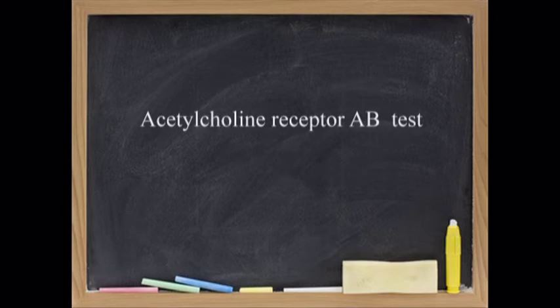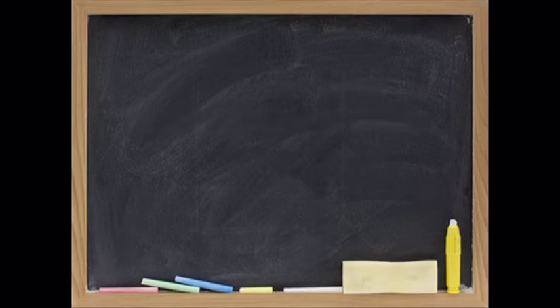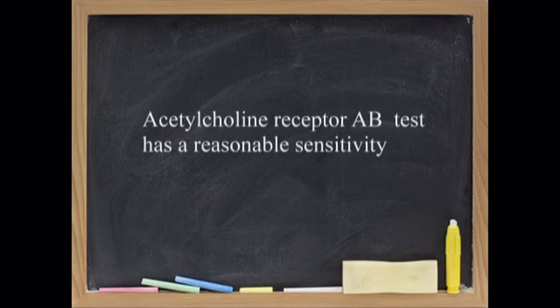One of the things about myasthenia gravis that's very exciting is that there's always new things being discovered about it. When I first learned about it, it was the acetylcholine receptor antibody, and that's all it was. But there are several antibodies that can affect the acetylcholine receptor in several different ways.